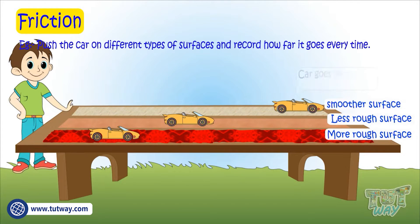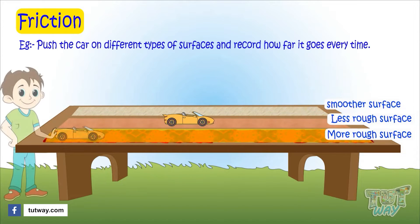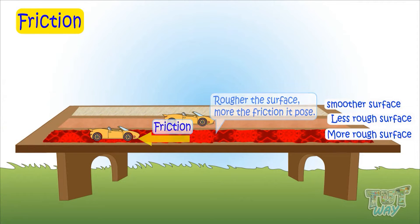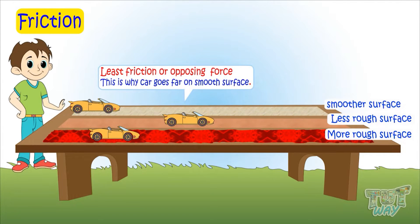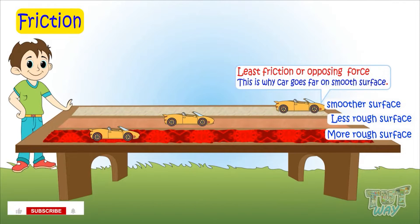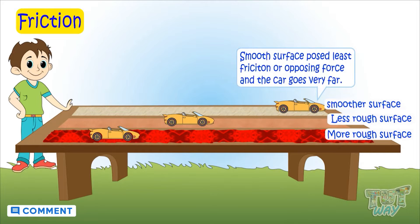The result is very clear. Smoother the surface, faster and farther the car goes. This is because the rougher the surface, the more the friction — the opposing force for any movement. The smoother the surface, the lesser the friction. Objects go very fast and smoothly on a smoother surface because there is no or very little opposing force, which is friction. So smooth surfaces pose less friction and the car goes very far.